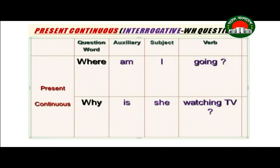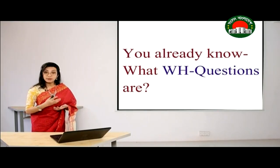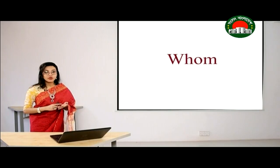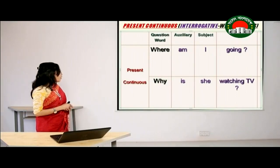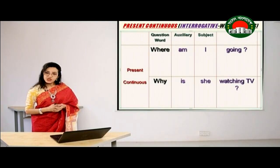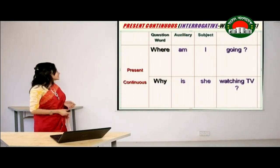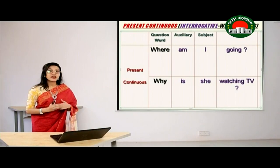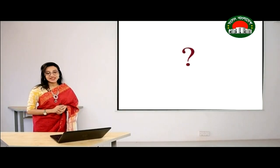Now I am showing you the structure of using WH questions in present continuous tense. WH question words include who, what, which, whose, whom. For example: 'Where am I going?' 'Why is she watching?' This is the same structure as the yes/no interrogative sentence — we just add the WH word at the beginning. If you want to make a WH question, just use the WH word at the beginning of the interrogative sentence. And do not forget to use the question mark.